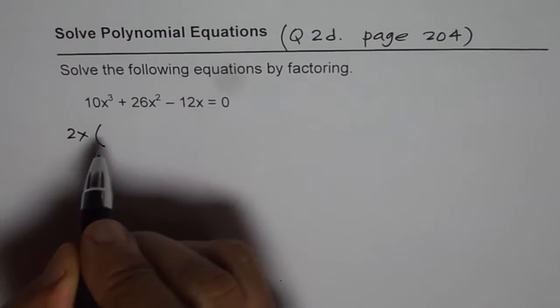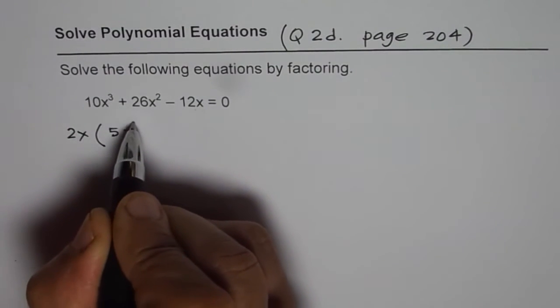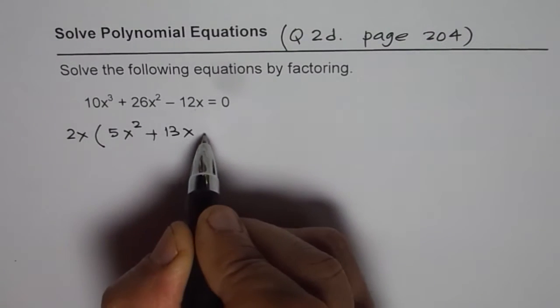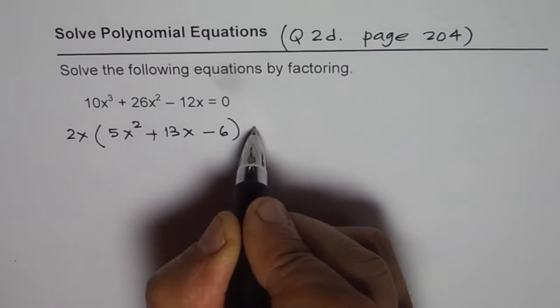So, we get 5x squared plus 13x minus 6 equals to 0.